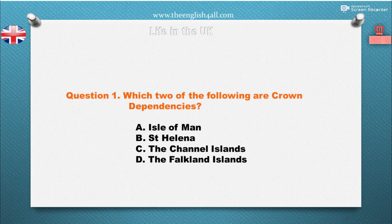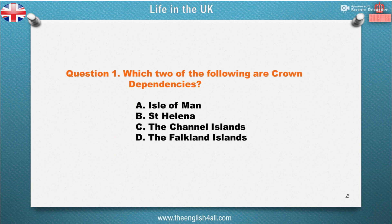Question 1: Which two of the following are Crown Dependencies? A. Isle of Man. B. St Helena. C. The Channel Islands. D. The Falkland Islands. The correct answer is: Isle of Man and The Channel Islands. Also good to know: There are also several British Overseas Territories in other parts of the world, such as St Helena and The Falkland Islands. They are also linked to the UK but are not part of it.